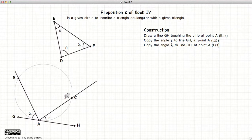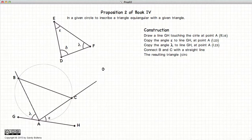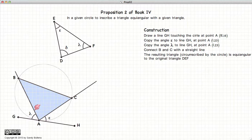B and C are the intersections of the two lines with the circle. And now we draw a line between B and C. Now this triangle ABC is equiangular to the original triangle DEF.